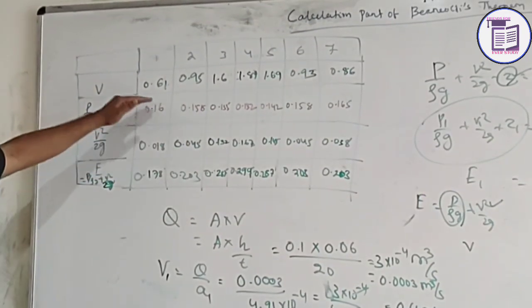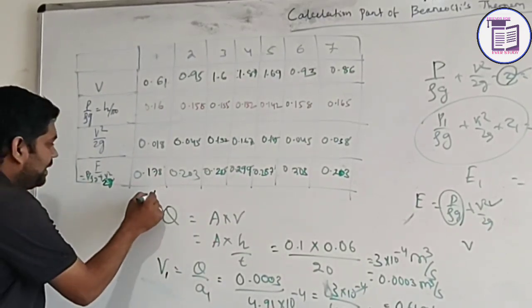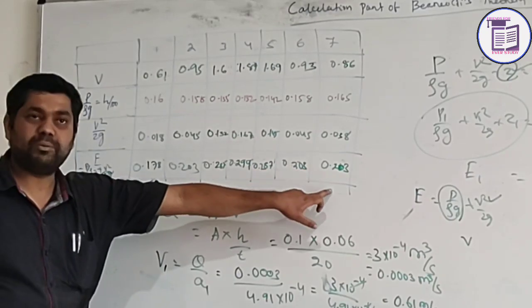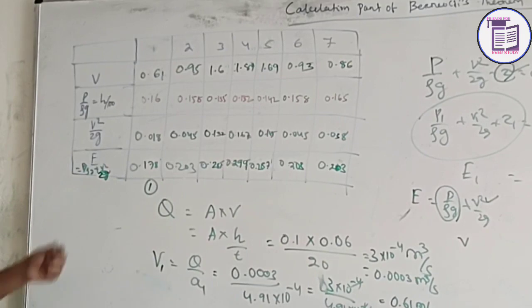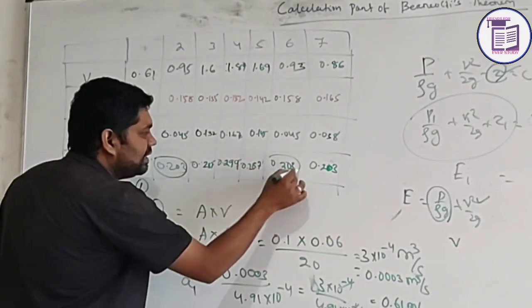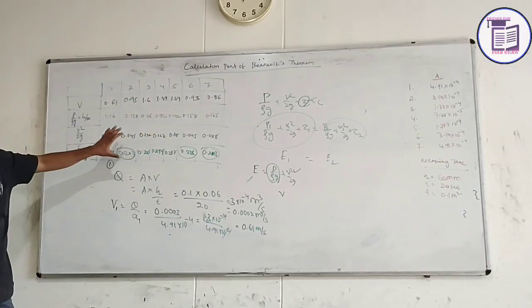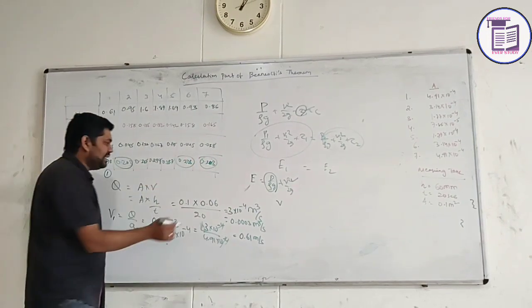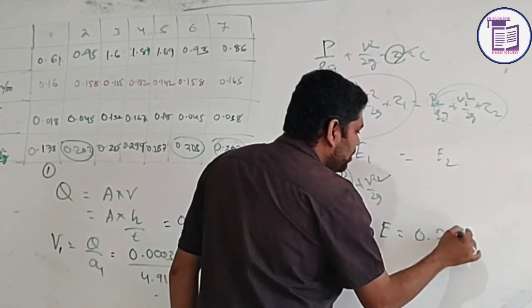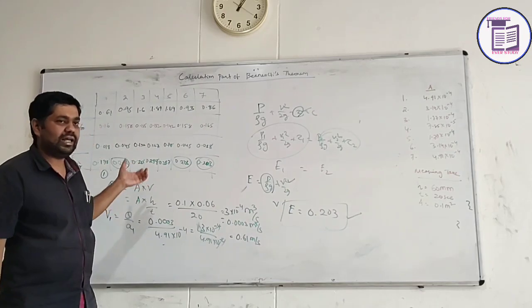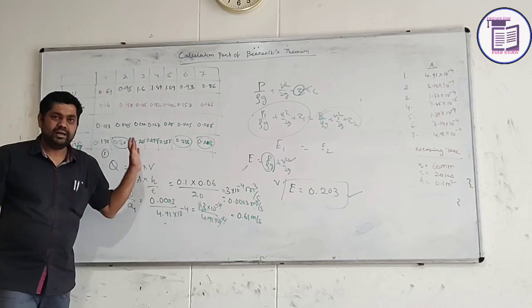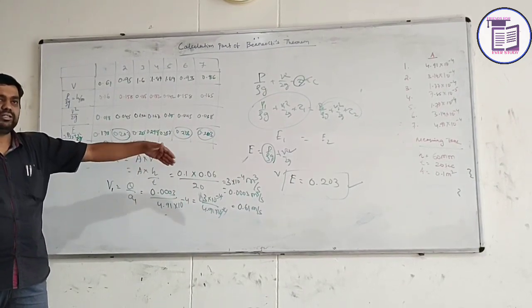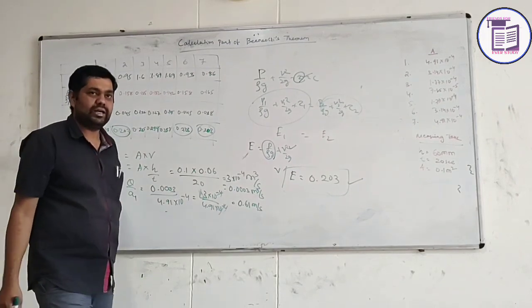From the calculations, the energy level of section 1 is 0.178. For sections 2 through 7, the values are 0.203, 0.287, 0.299, 0.287, 0.203, and 0.203. Due to some experimental error, you can see variations, but the energy levels are approximately equal at all points according to Bernoulli's theorem. You can satisfy Bernoulli's theorem using this experiment. This is all about the calculation part — using this, you can define Bernoulli's theorem in different flow processes and define the energy level for future experiments.